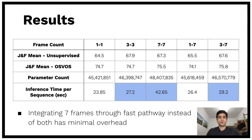As a last point we come to our performance measures. Giving additional frames only to the fast pathway has much less influence on performance than giving them to both pathways. The difference between 3-3 and 7-7 is about 15 seconds, whereas 3-7 is only about two seconds slower than 3-3.